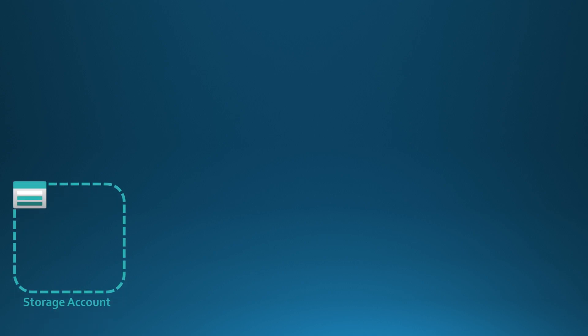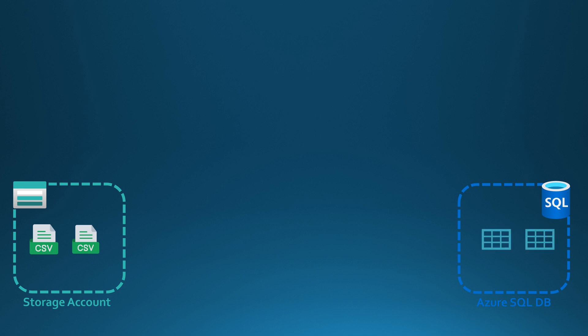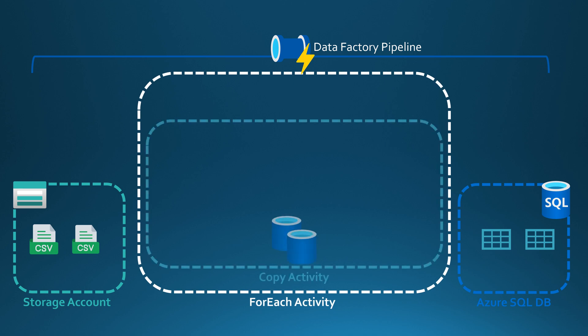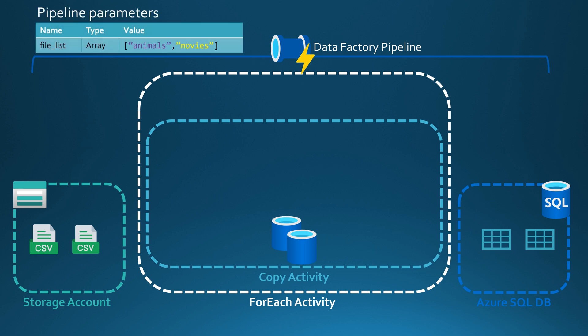In that storage account we have two CSV files with different column names, and then we have an Azure SQL database with corresponding tables for those CSV files. We are going to build a Data Factory pipeline to handle the copy from the storage account to Azure SQL database using the ForEach activity. Inside that activity we are going to have a copy activity. We'll set the pipeline parameters with our file list — animals and movies — pass those parameters to the ForEach activity, and use the pipeline parameters file list reference to fetch them as our item list.